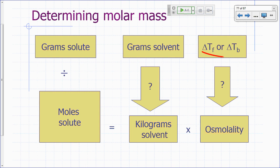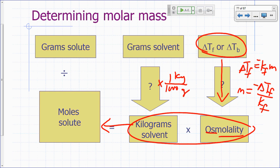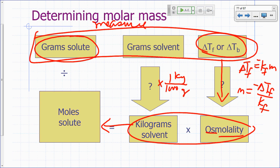Summary of the procedure: measure ΔT_f or ΔT_b in the lab, get the osmolality (total molality = ΔT_f / −K_f or ΔT_b / K_b). Convert grams of solvent to kilograms, multiply by osmolality to get moles of solute. Divide grams of solute by moles of solute to get molar mass. This is what you'll be doing in CHEM 110 lab.